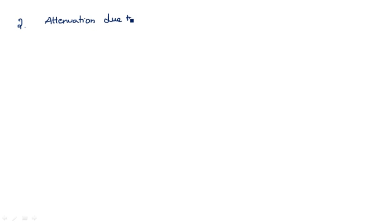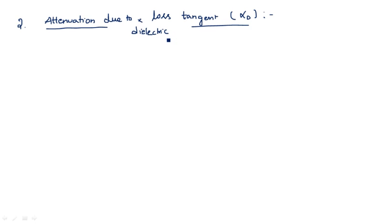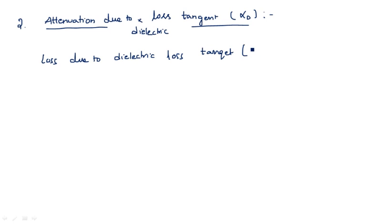The second attenuation parameter is attenuation due to dielectric loss tangent, indicated by alpha D. This loss is represented as alpha D, and the key parameter is tan delta, which can be very important for this type of loss.